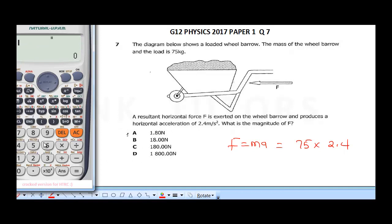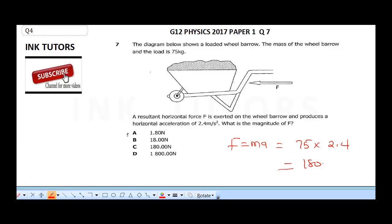So this is going to give us 75 times 2.4. When you bring in your calculator to punch that, 75 times 2.4, we're going to get 180 newtons. So the final answer here is 180 newtons. The correct answer is C.